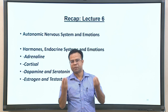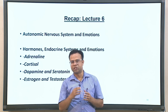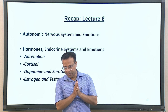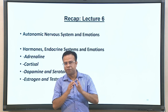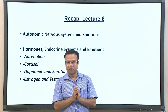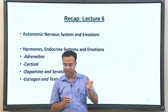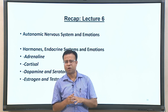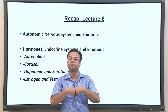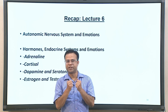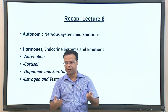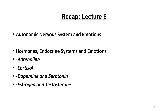Let me give a brief recap of the last lecture, where we discussed how emotion is associated with various physiological changes in the body. All emotions involve certain physiological changes, particularly with intense emotions. We might have experienced that whenever we feel anger or fear, there are visible changes in the body — for example, fear may be associated with shaking and increased heart rate. These physiological changes are primarily associated with the autonomic nervous system and hormones.